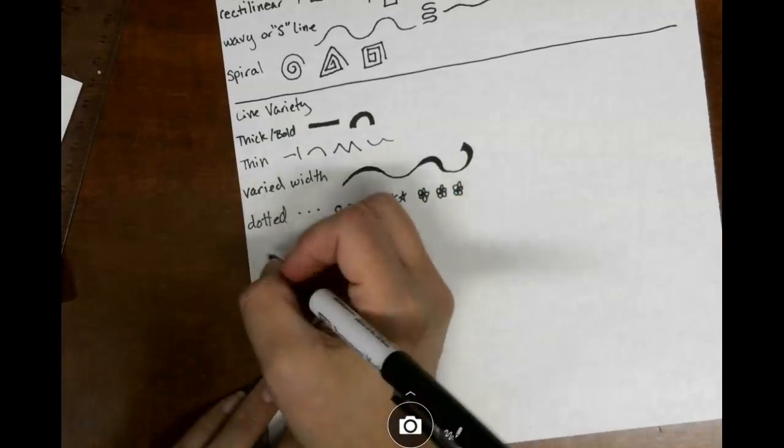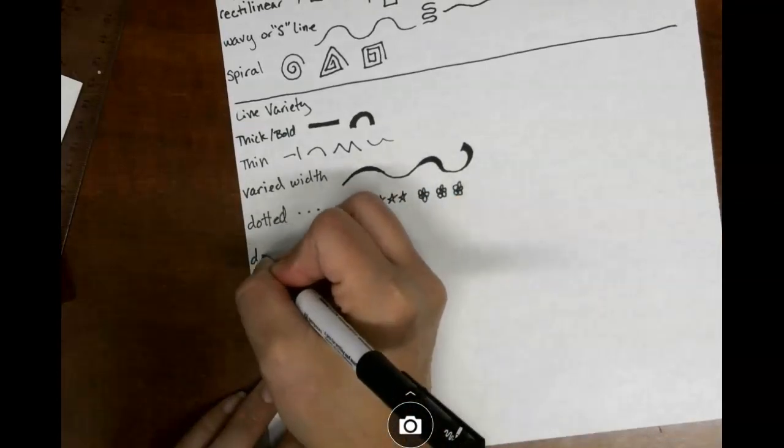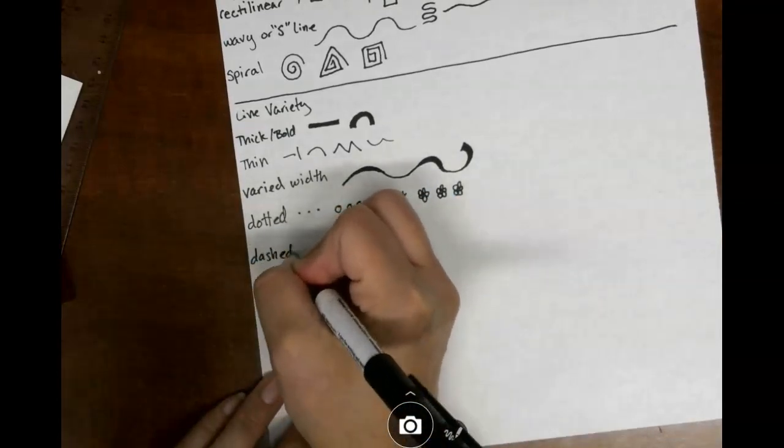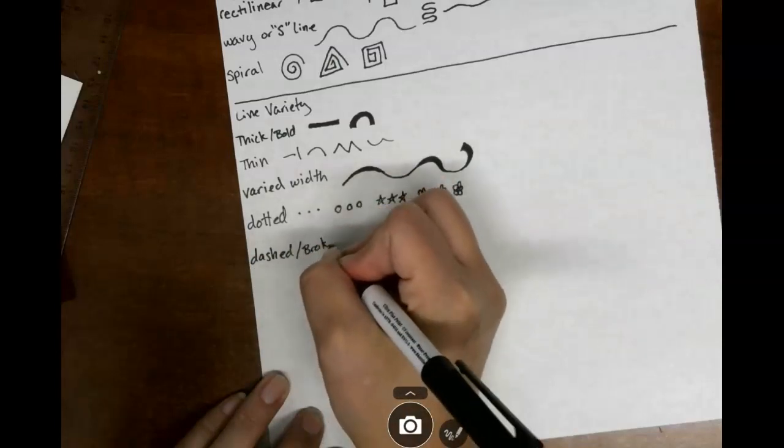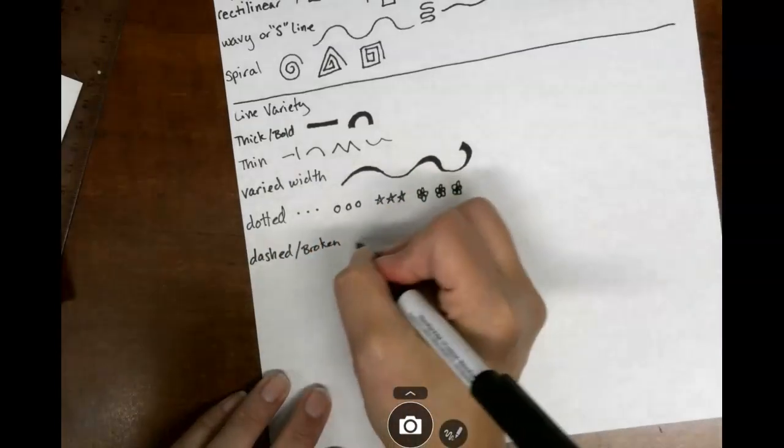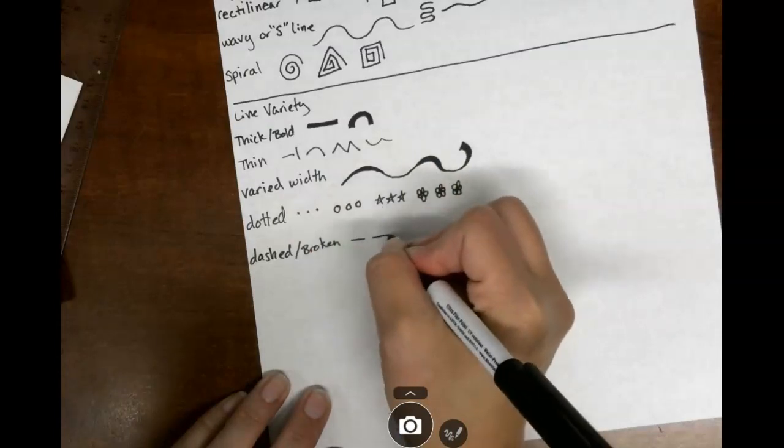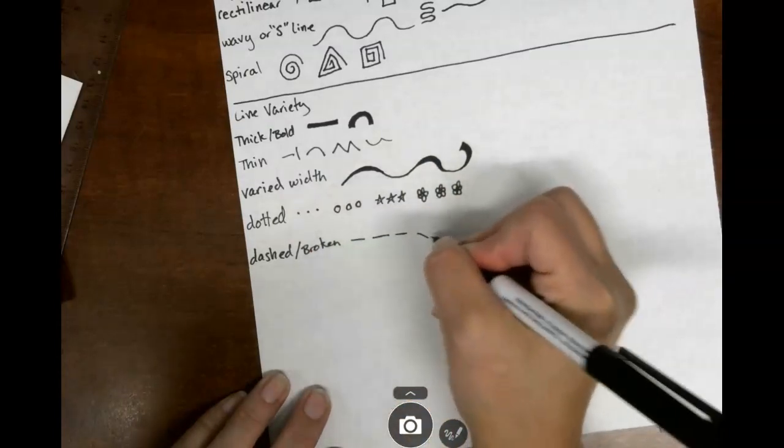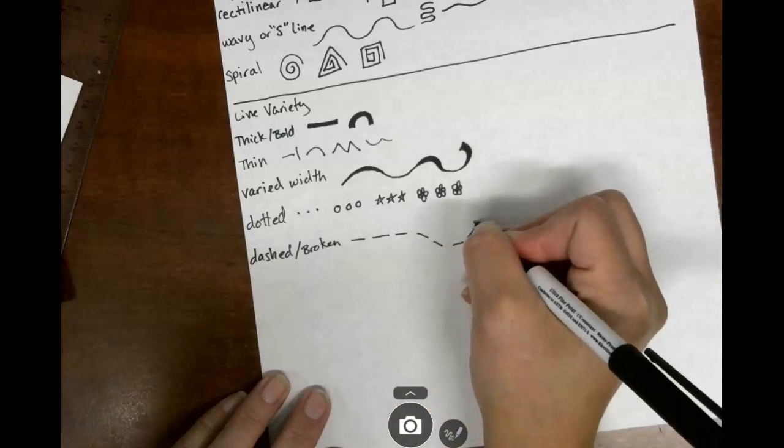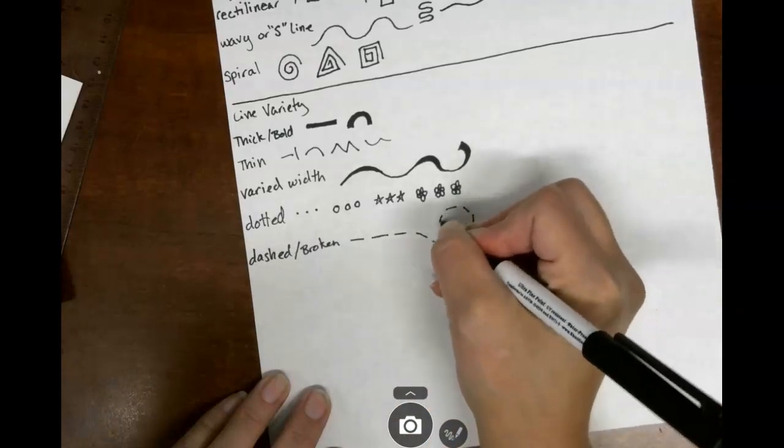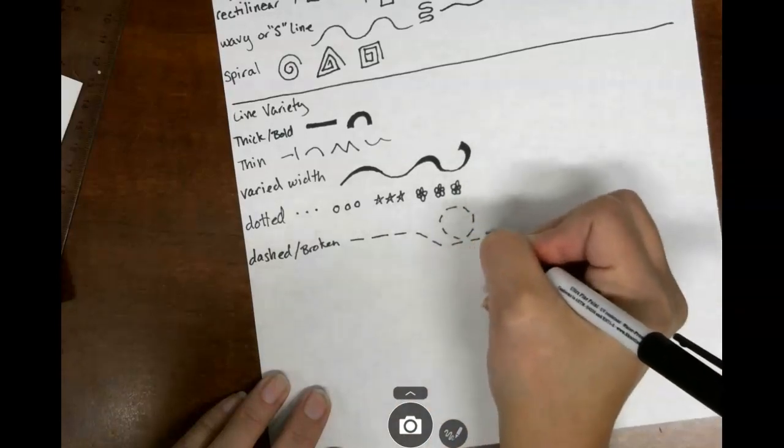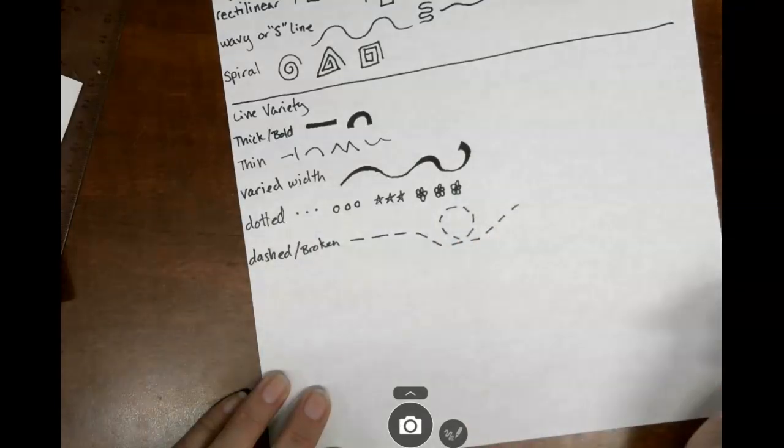Next is a dashed or broken, D-A-S-H-E-D slash broken, B-R-O-K-E-N. And this is just your line like this, and yes it can flow around to other things.